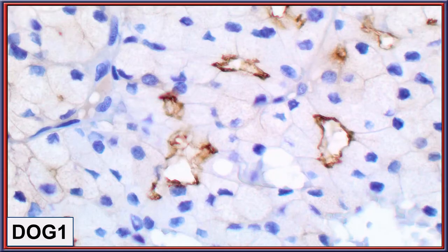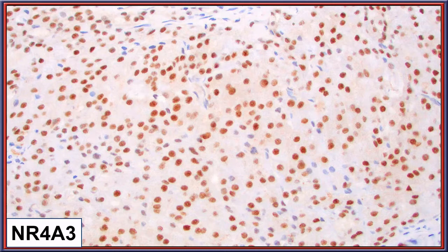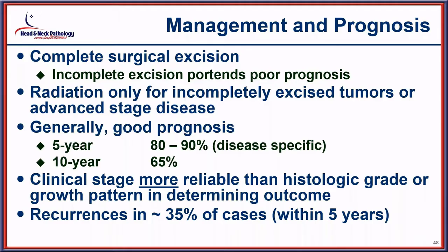PAS shows accentuation of granules in a luminal distribution, immediately adjacent to the lumen. DOG1 shows delicate membrane-type reactivity. Management is surgical excision; if incompletely excised, tumor recurrence and metastasis are more likely. Generally there is an excellent prognosis with clinical stage being the most important prognostic determinant beyond histologic grade. Recurrences develop in about 35% of cases. De-differentiation, now correctly termed high-grade transformation, should be used for these tumor types.